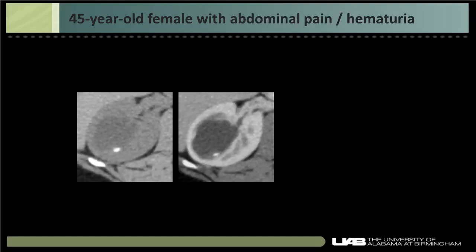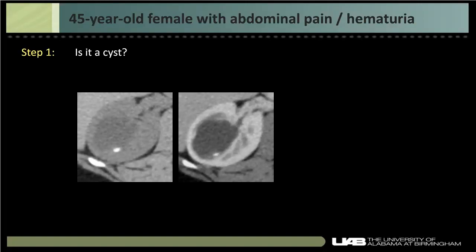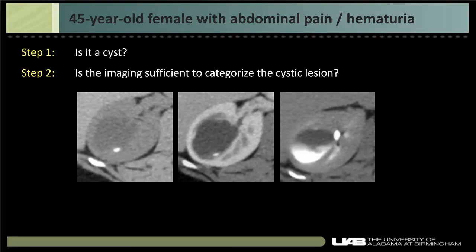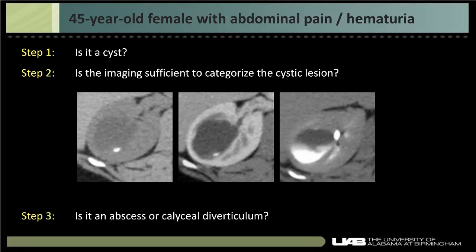Similarly, a cystic lesion with calcification that accumulates contrast on excretory phase imaging and communicates directly with the collecting system is by definition a calyceal diverticulum — not a cystic renal mass to be Bosniak classified. The three essential questions before Bosniak classification are: Is it a cyst? Is the imaging sufficient (multiphasic CT, MRI, or contrast-enhanced ultrasound)? And is this an abscess or calyceal diverticulum?